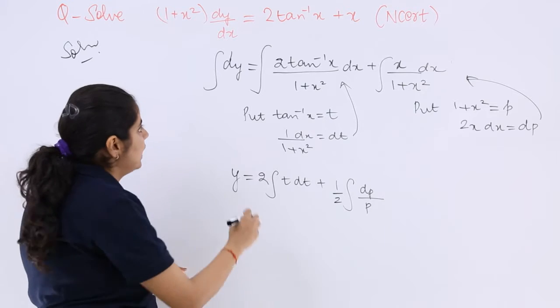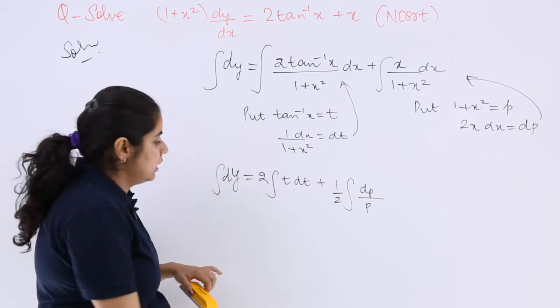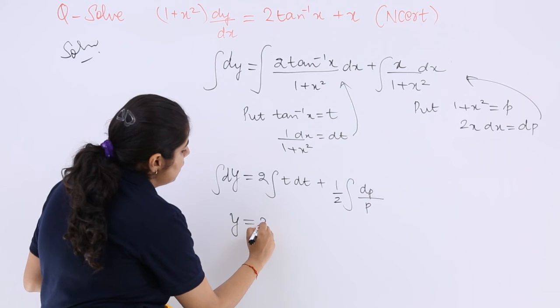Now see what should be the answer like. You can even keep it as dy only here. In the next step you make it y. You make it 2.